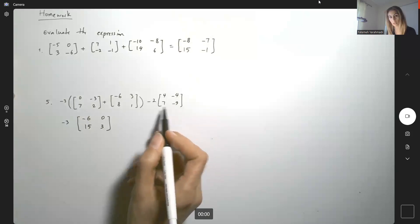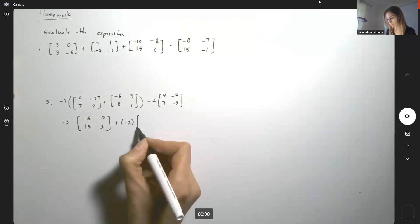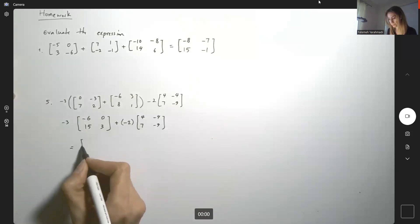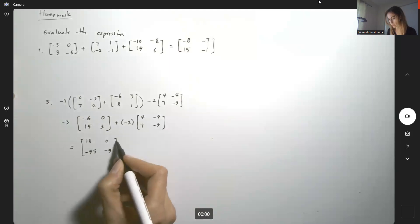And then you're going to find the scalar multiplication here. You can say that I'm adding these after finding the scalar multiplication. So this guy is equal to, you get 18, 0, negative 45, negative 9.